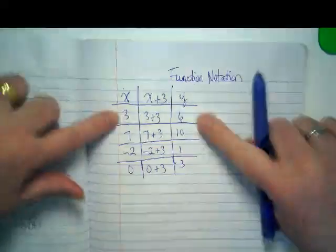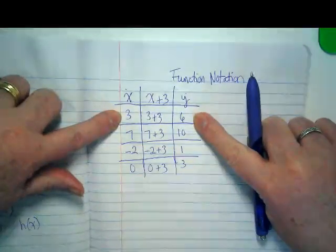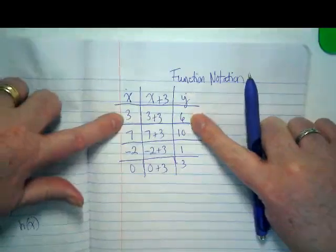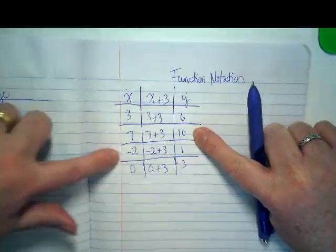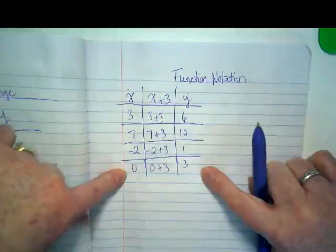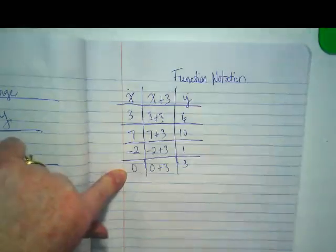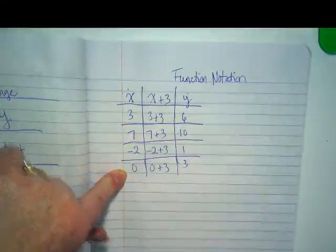We can then take this input and the output, and we can make x, y pairs and graph this, couldn't we? This would be a point of 3 comma 6, 7 comma 10, negative 2 comma 1, 0 comma 3. And we could graph that by connecting the dots and making our line.